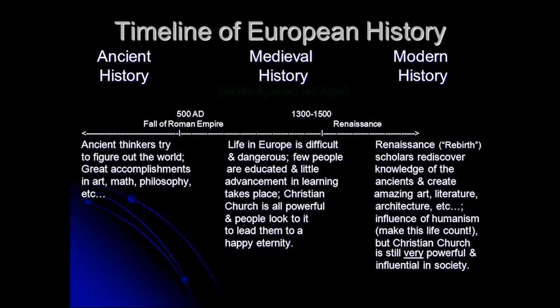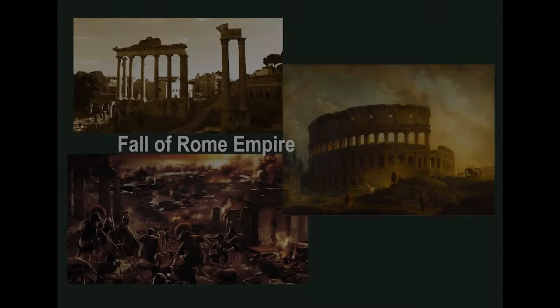In the history of Europe, the Middle Ages, also known as the medieval period between the 5th and 15th century, began with the fall of the Roman Empire, which had merged into the Renaissance and the Age of Rediscovery. The most important architectural representative of this period was the church building. Roman churches were divided into Western Roman Catholic and Eastern Roman Orthodox after the fall of the Roman Empire.